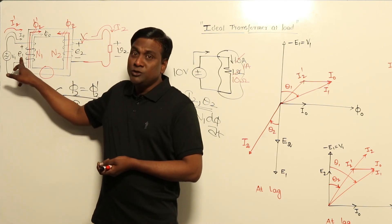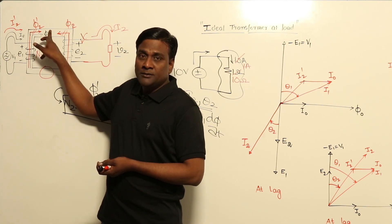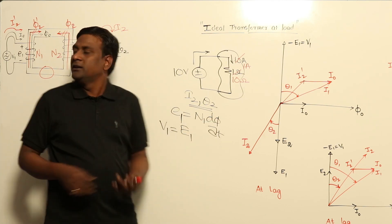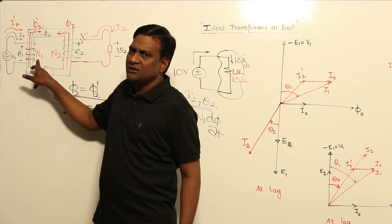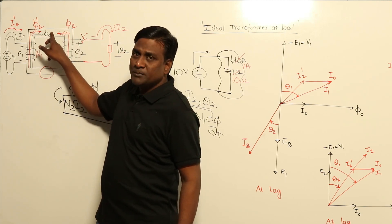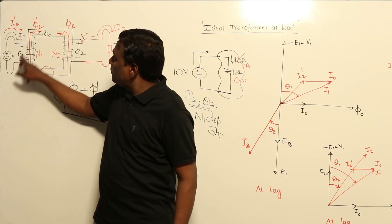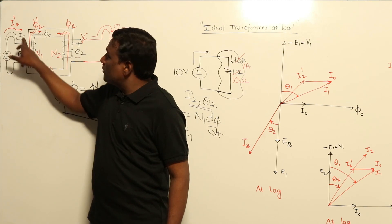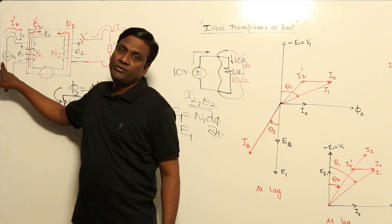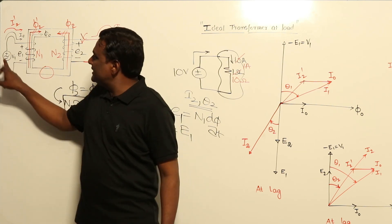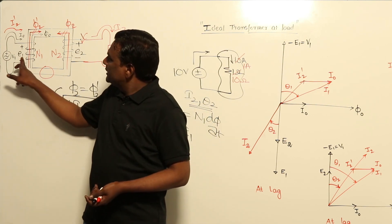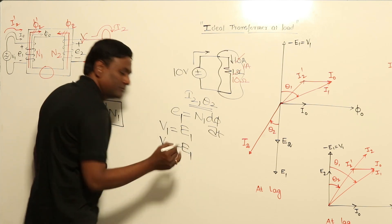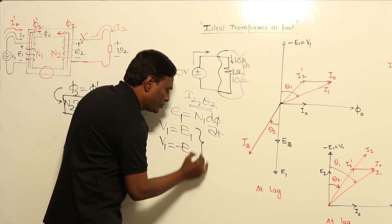By Lenz's law, anything created should oppose the cause of its creation. E1 is induced by N1 and operating flux φ₀. E1 is induced voltage because of φ₀. Can E1 oppose φ₀ by Lenz's law? No — E1 is in volts and φ₀ is in webers. φ₀ is created because of I₀, and I₀ is created because of V1. So E1 should oppose V1, meaning V1 = −E1.